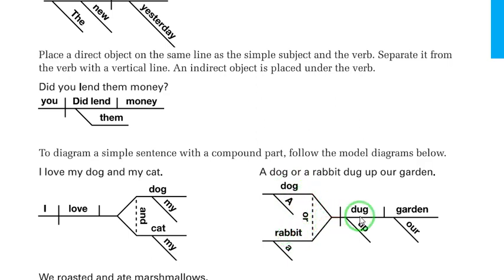But both have the same or share the same verb and the direct object. The other parts of the sentence are always written on the slanted lines.